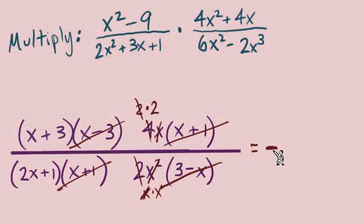There is nothing else we can cancel. So the numerator: 2(x + 3). Denominator: x(2x + 1). A quick reminder, now that is our answer.